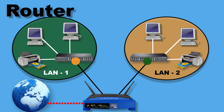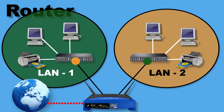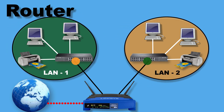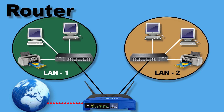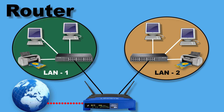The router is an intelligent device that performs two basic functions: first, connecting at least two or more different networks, and second, providing the best path to access another network or requested content on the internet. Modern routers also perform tasks like NAT, which stands for Network Address Translation, and can provide IP addresses to hosts using DHCP, so you don't need to configure IPs manually on your PCs.